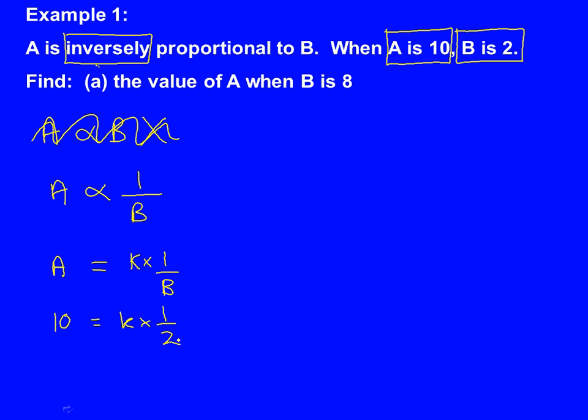Our job now is to get K on its own. To do that, I'm going to times by this 2 on the bottom. So 10 times 2 is 20, so K is 20.